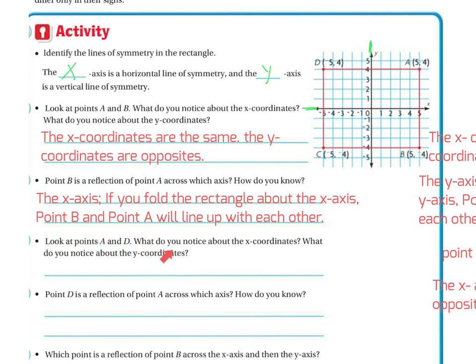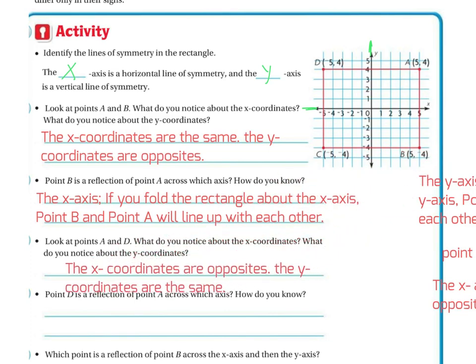Look at points A and D. What do you notice about the x-coordinates? What do you notice about the y-coordinates? Here's A and D. A and D both have a 5, they're just opposite signs, and they both have a positive 4. So the x-coordinates are opposite, and the y-coordinates are the same.